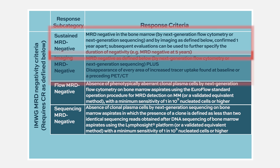The fourth method is sustained MRD negativity. This refers to two time points — whether by next-generation flow or next-generation sequencing — that are more than one year apart and both negative. That constitutes sustained MRD negativity.